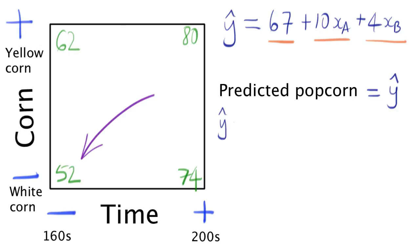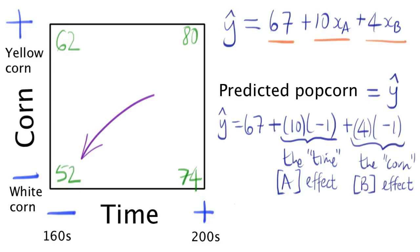We start with the baseline value of 67, then the effect of 10 is multiplied by minus 1 because we're at short cooking times. And the effect of 4 is multiplied by minus 1 because we're using white corn. This gives a prediction of 53 popcorns. That's pretty close to the actual value of 52.